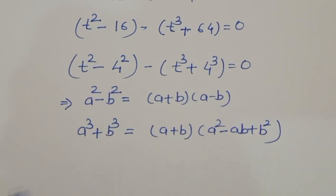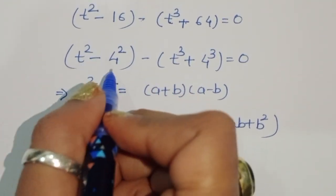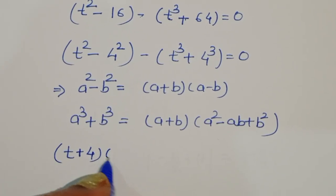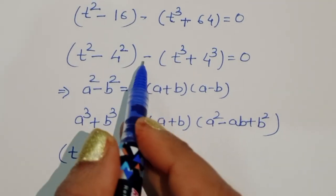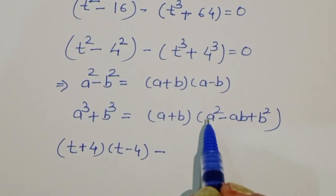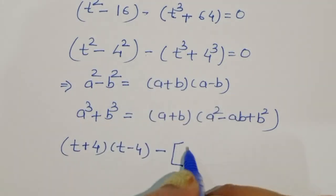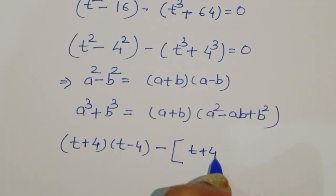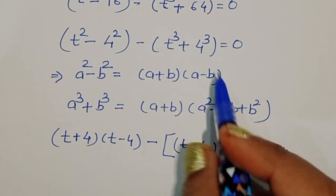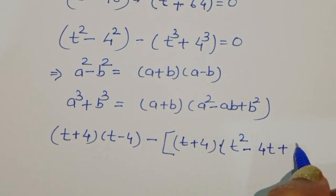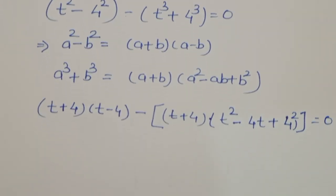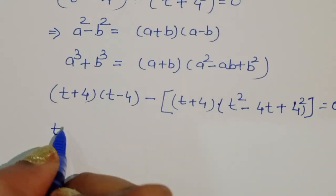Applying the difference of squares formula to t squared minus 4 squared, we get (t plus 4)(t minus 4). For the cube part, minus t cubed plus 4 cubed, applying the sum of cubes formula gives minus (t plus 4)(t squared minus 4t plus 16), which equals 0.